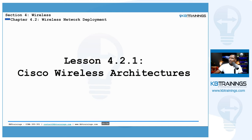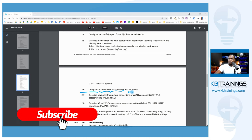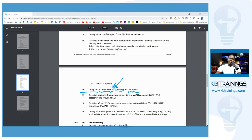If we go back to the Cisco exam blueprint, you can see that under point 2.6, Cisco is asking us to compare the different Cisco wireless architectures as well as the different AP modes. In this lesson we're going to cover the wireless architectures, and in the next lesson, 4.2.2, we're going to cover the AP modes.